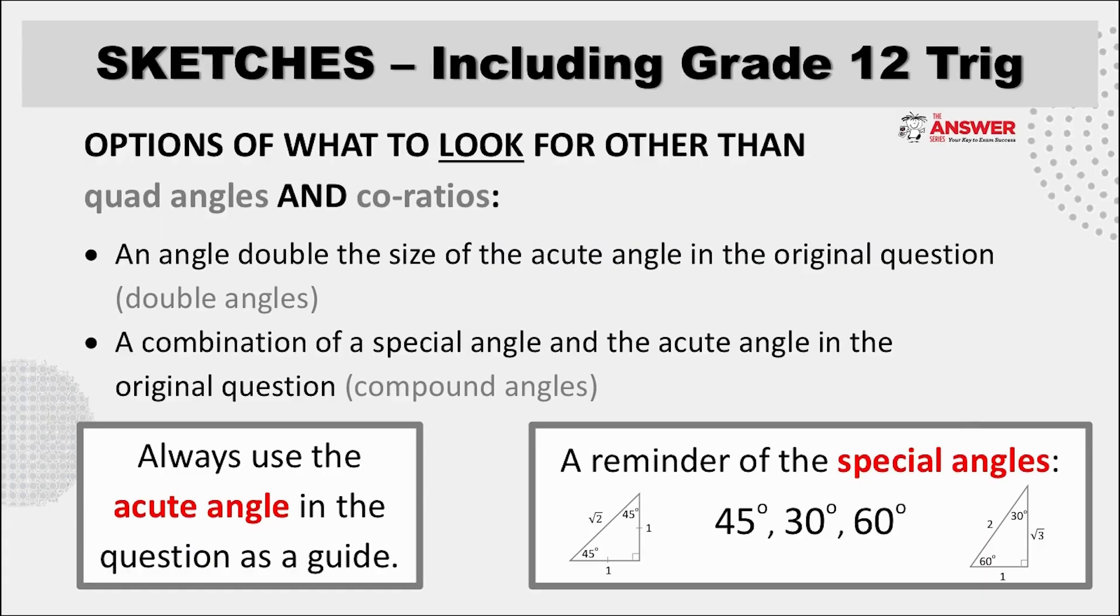As you can see here for sketch questions including grade 12 trig we now need to look beyond quad angles and co-ratios to also include considering compound and double angle options. The key being to make sure to always keep the acute angle given in the question as your anchor.